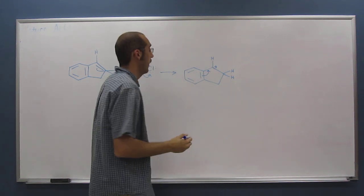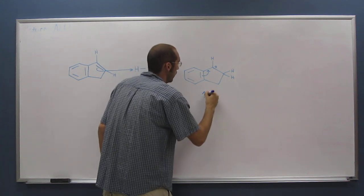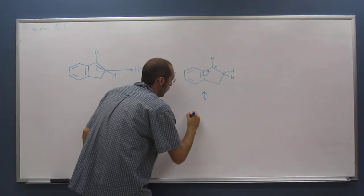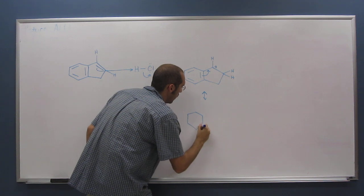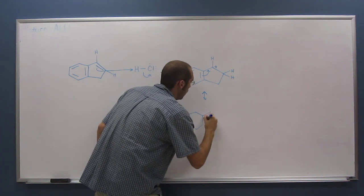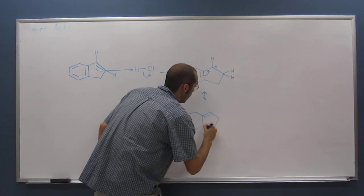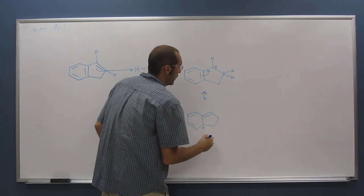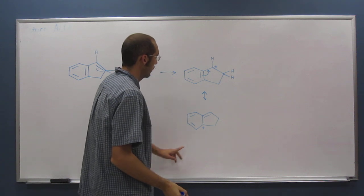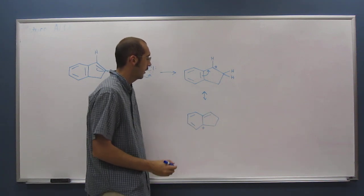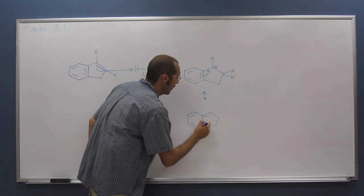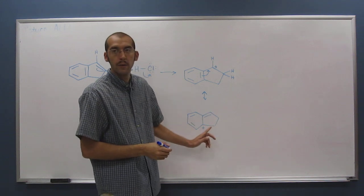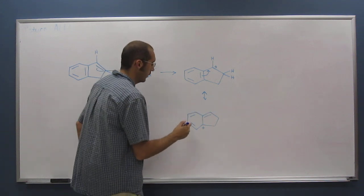So we'll just move that electron pair up there. So as you can see, I'm not going to include all the hydrogens. As you can see, we've already dispersed that positive charge over two carbons, right? So let's do it again, see if we can do it again.